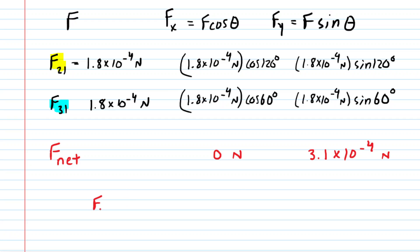One way of writing the final answer to the question, if we were to use unit vector notation, is we could say that the net force is zero newtons, labeled with i hat because that represents the x direction, plus 3.1 times 10 to the minus 4 newtons, labeled with j hat because that represents the y direction.